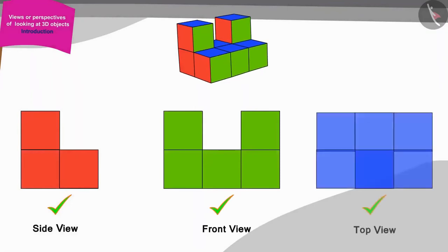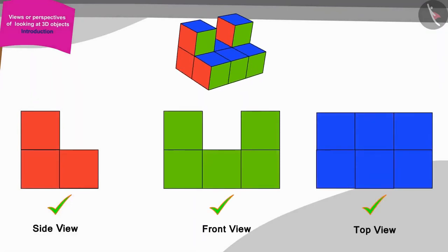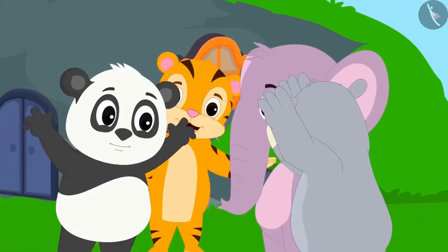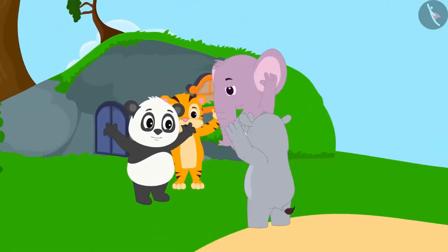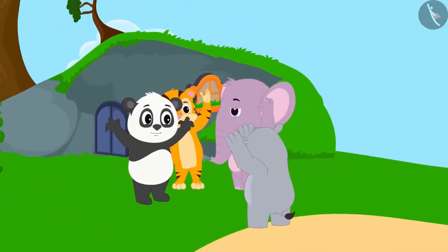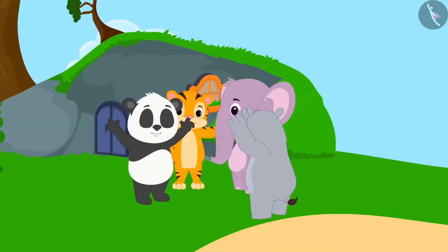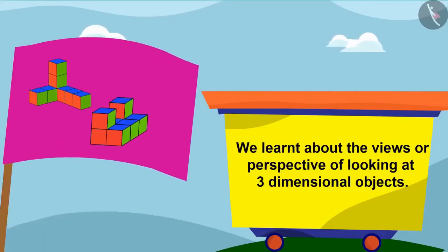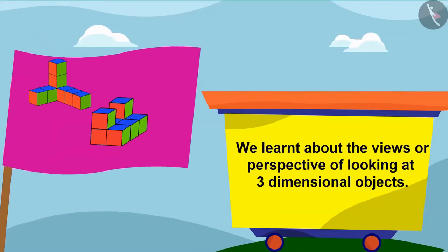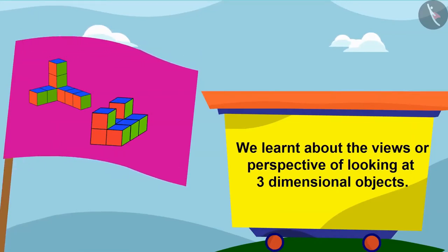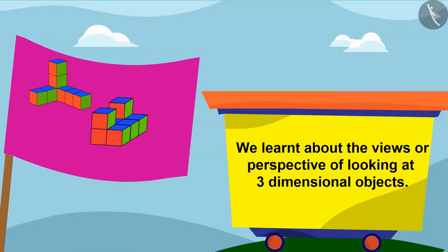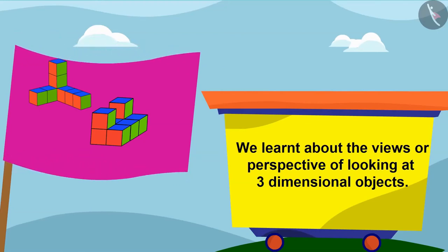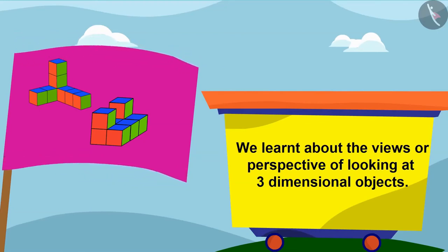Well done, children. You have made a perfect picture. All friends kept playing together. Children, you can also play this kind of game with your friends. Children, in this lesson, we learned about the views or perspectives of looking at three-dimensional objects.